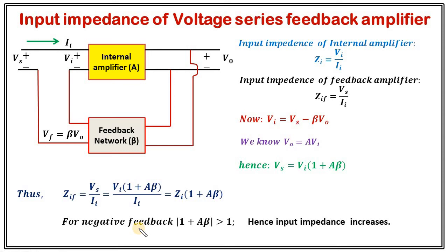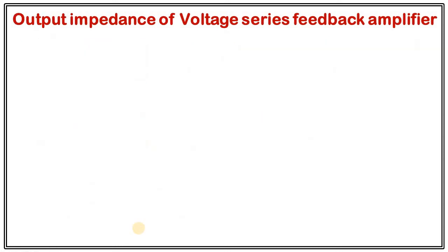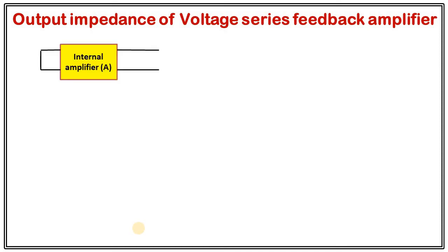So depending on the topology, input impedance can be changed. If you want to increase the input impedance, you can simply use the voltage series feedback amplifier. Now, the next one is output impedance. To calculate output impedance, first imagine a situation where we don't have the input signal — just the internal amplifier without input signal — and we connect a voltage source at the output terminal. Due to that voltage source, let I prime be the amount of current flowing inside the internal amplifier as we look from the output terminal.